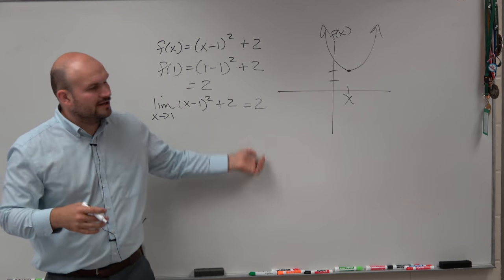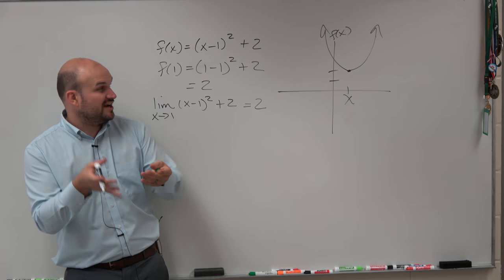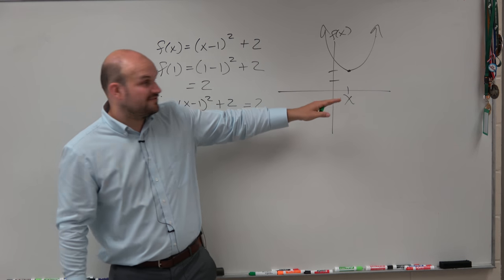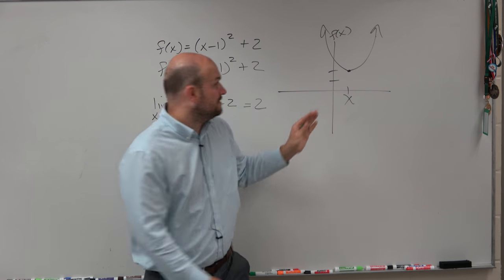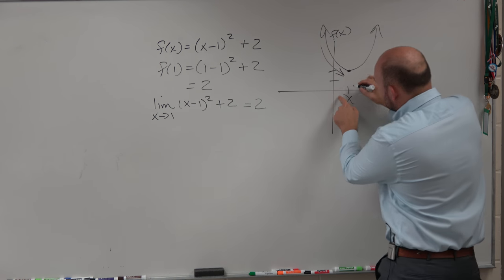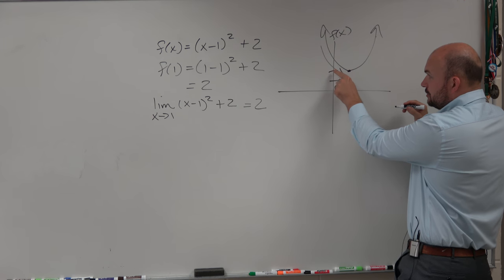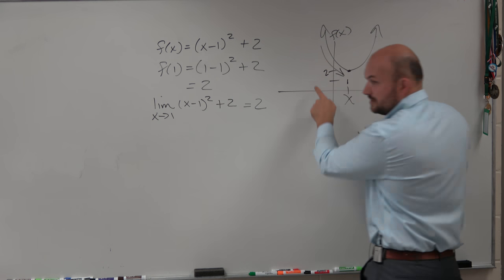So obviously with the technology, you can see. You guys saw it from the table values. You can also just look at this graph. This is a continuous graph. So from the left, as x gets really close to the number 1, we're getting closer to the output value of 2.